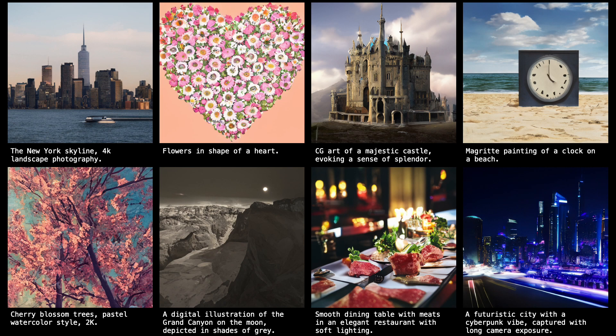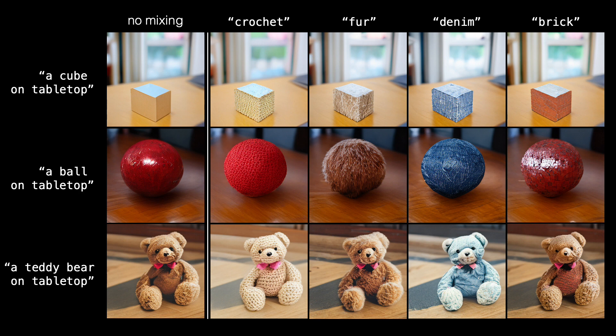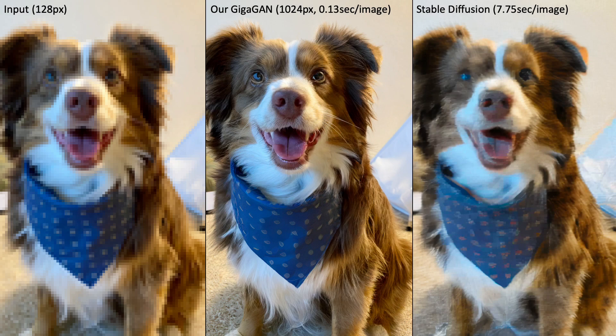Here we present a set of synthetic images generated by GigaGAN. GigaGAN maintains the disentangled latent space inherent in StyleGAN2, allowing us to combine the coarse style from one sample with the fine style from another. What sets GigaGAN apart from other diffusion models is its capability to perform high-quality image upsampling at an incredibly fast pace. For instance, GigaGAN can upsample a 128 pixel image to 1K resolution in a mere 0.13 seconds, whereas the Stable Diffusion model takes about 7 seconds. GigaGAN is also capable of 4K upsampling.